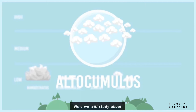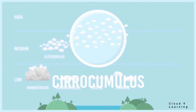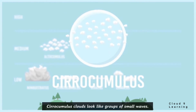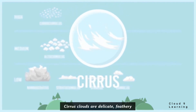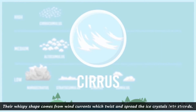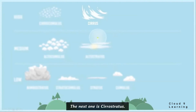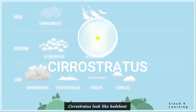Now we will study about high clouds. The first one is cirrocumulus. Cirrocumulus clouds look like groups of small waves. Cirrus clouds are delicate, feathery clouds mostly made of ice crystals. Their wispy shape comes from wind currents which twist and spread the ice crystals into strands. They generally occur in fair weather conditions. Cirrostratus clouds look like a bedsheet with wrinkles, and a hollow is generally seen around these clouds.